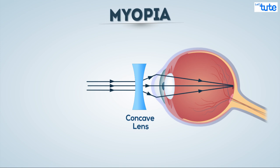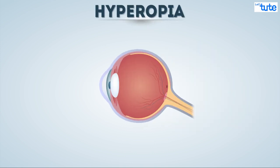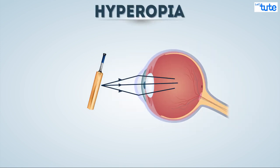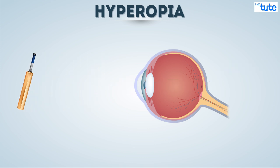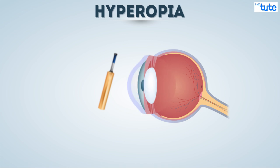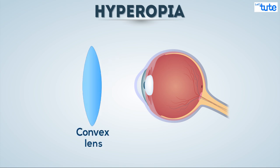The opposite of myopia is hyperopia, where the image is formed behind the retina, and because of this, objects which are far can be seen clearly and objects which are close are blurry. The reason for the defect is that the eyeball is compressed and the focal length is reduced, which causes the focal point to fall behind the retina.